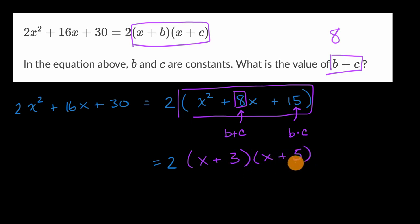You can verify that. 3 times 5, you're gonna get that 15 there. And then when you multiply these two binomials, you're gonna get 3x plus 5x, which is going to be 8x. And so you can see that you can either treat B as 3 and C as 5, or B as 5 and C as 3. But either way, B plus C is going to be equal to 8.